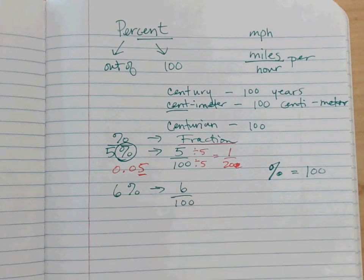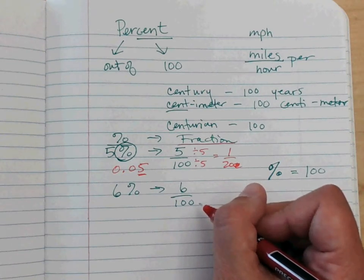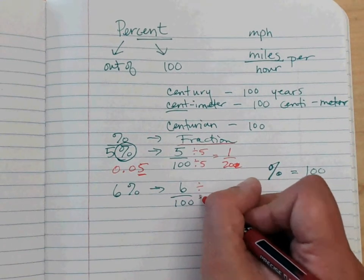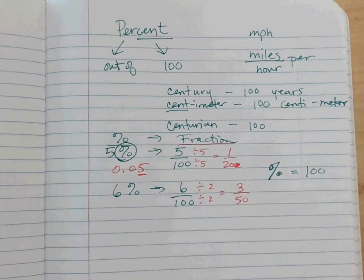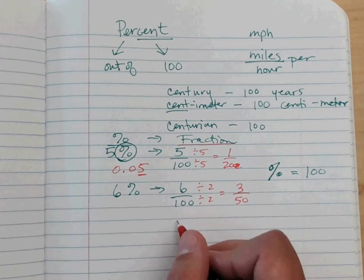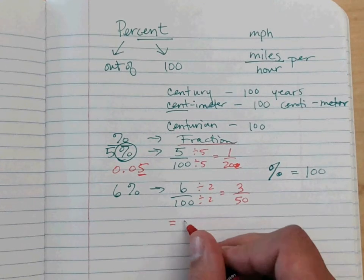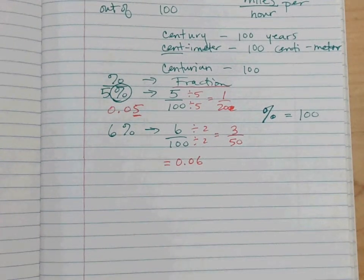Let's reduce six out of a hundred. Three doesn't go into 100 evenly, so we divide by two: six over 100 reduces to three out of 50. Notice how hard it is to compare one twentieth to three fiftieths — they don't share a denominator. That's why we love percents. Six out of 100 as a decimal is 0.06.